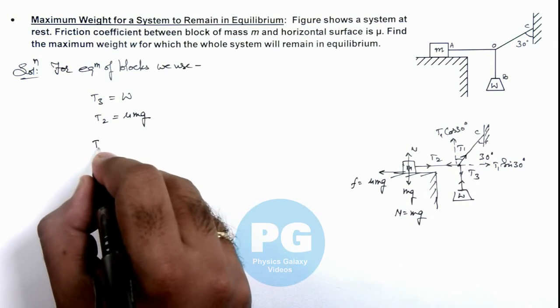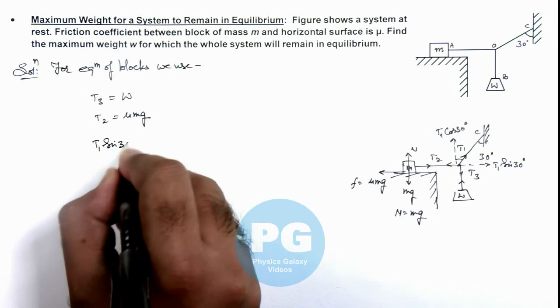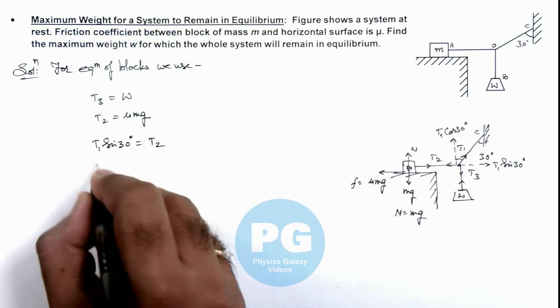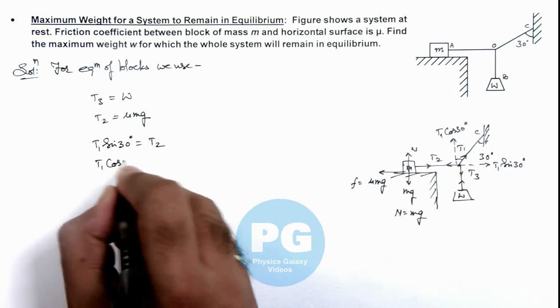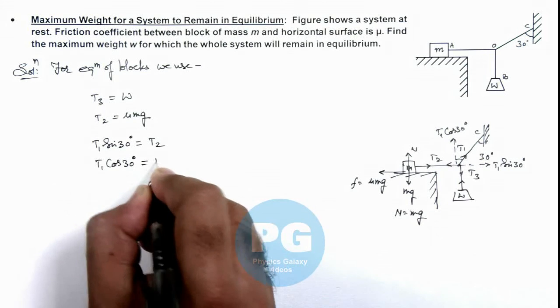t1 sin 30 degrees is equal to t2, and t1 cos 30 degrees is equal to t3.